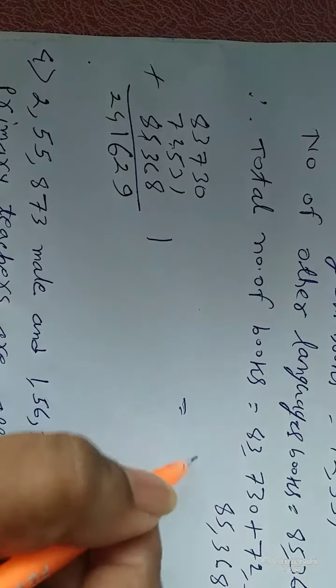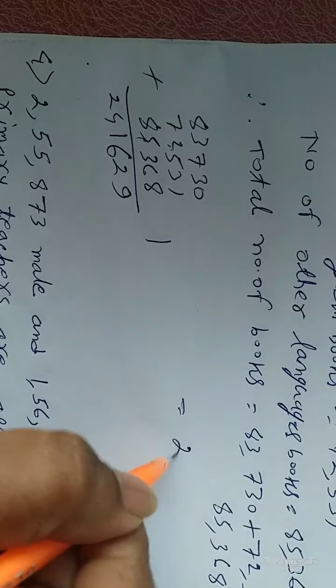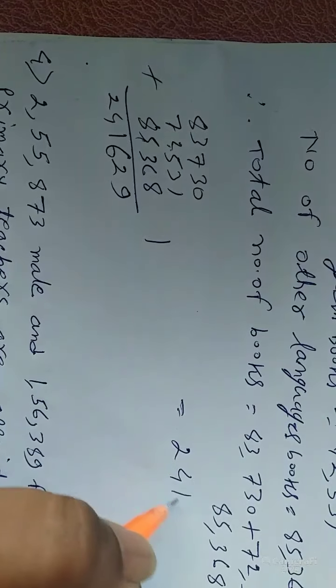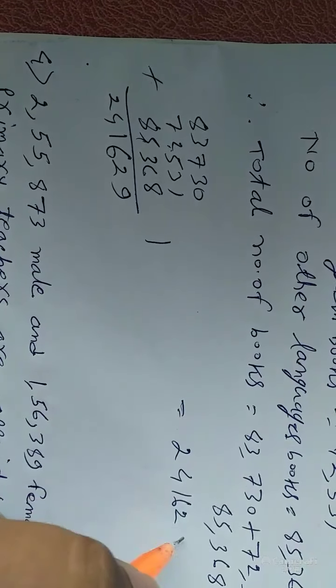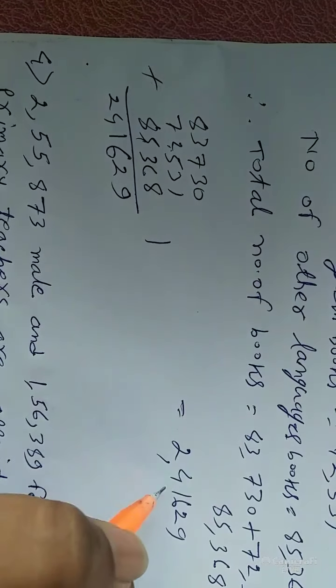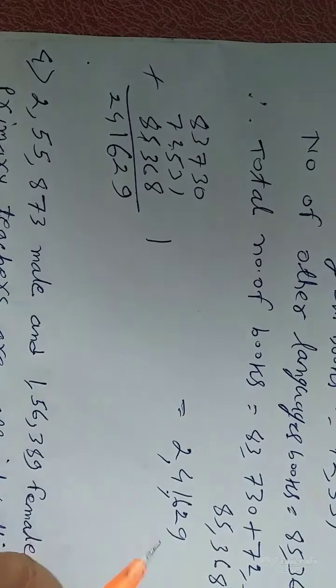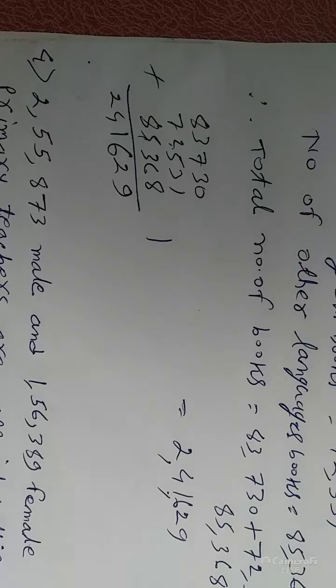So the total number of books is 2,41,629.